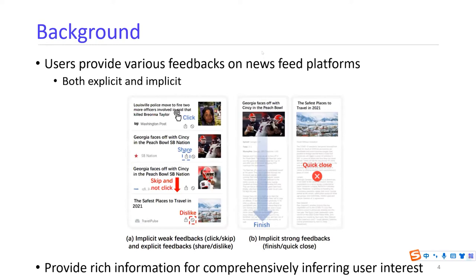Users on news feed platforms have various feedbacks, and some of them are explicit and some are implicit. For example, explicit feedbacks such as share and dislike are very strong, although they can be somewhat sparse. In addition, click and skip feedbacks are usually implicit feedbacks, and this kind of feedback is usually very abundant.